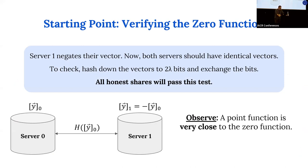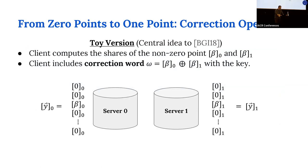We start with a similar observation: the point function is very close to the zero function, and the zero function is easy to verify. If the only valid value for y is all zeros, the share held by server one is the negation of the share held by server zero. Server one just negates their share and now both servers have the same vector, so verification is just an equality check done by hashing down the vectors. Crucially, a malicious server receives no new information from this check, since it already has the hash it will receive from the other server.